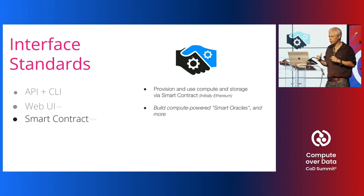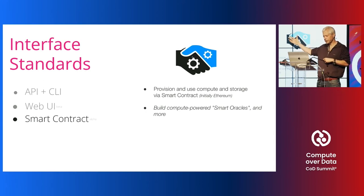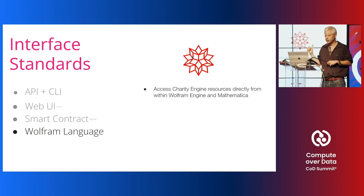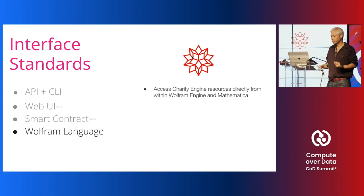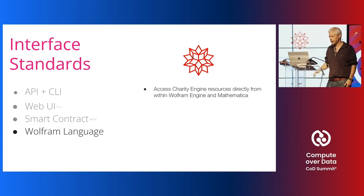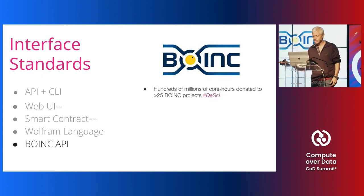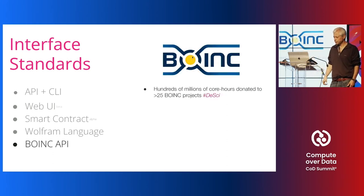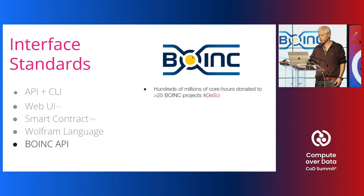That means you can build smart oracles and other computationally intensive ways of bridging the gap between Filecoin data and the rest of the world, particularly where compute needs to be inserted in the middle. We also have a nice integration with Wolfram Language where you can access our compute resources directly from within the Wolfram notebook — just a single line of code to send work out to process on the Charity Engine network. We also support BOINC, having donated hundreds of millions of core hours to more than 25 BOINC projects.